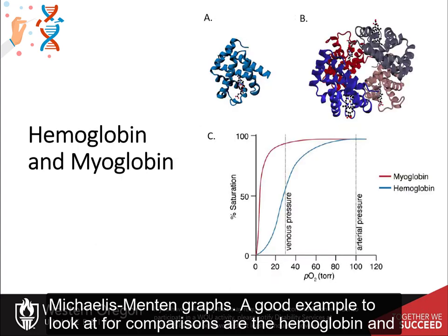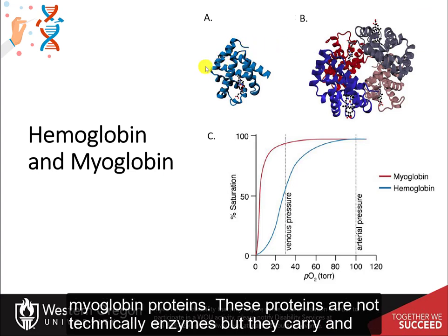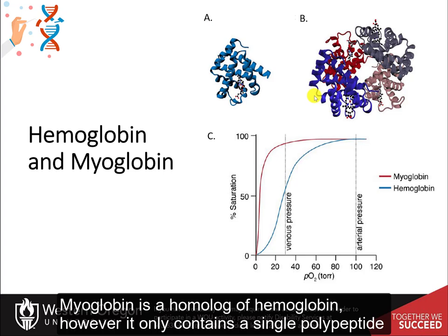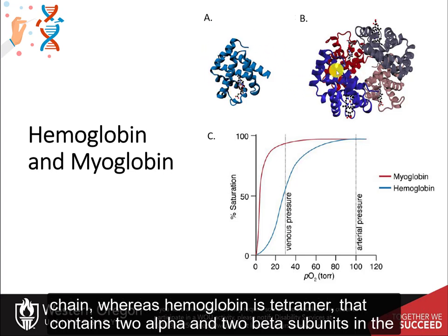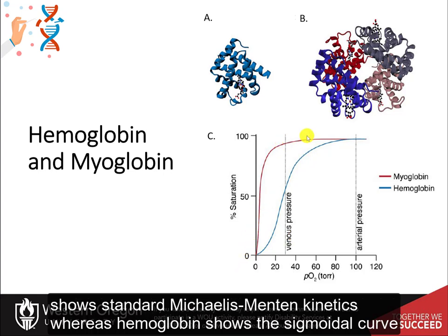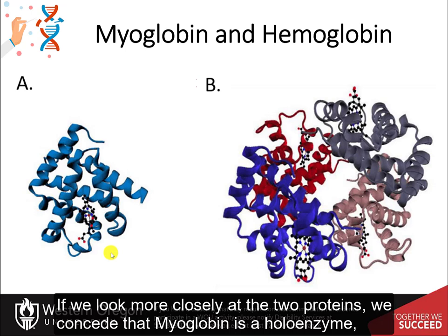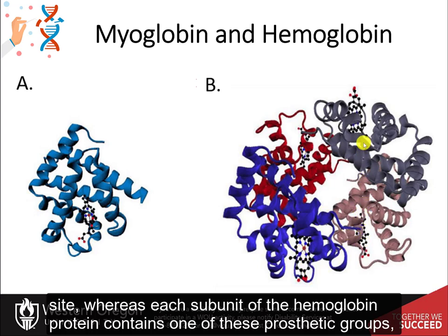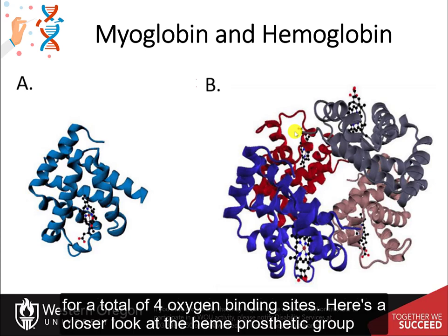A good example for comparison are the hemoglobin and myoglobin proteins. These proteins are not technically enzymes, but they carry and transport oxygen, so we can look at oxygen binding using standard enzymatic curves. Myoglobin is a homologue of hemoglobin; however, it only contains a single polypeptide chain, whereas hemoglobin is a tetramer containing two alpha and two beta subunits in the adult form. Myoglobin shows standard Michaelis-Menten kinetics, whereas hemoglobin shows a sigmoidal curve.